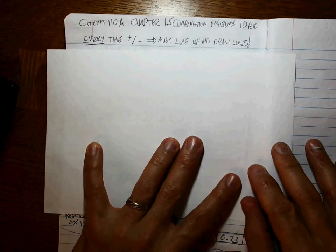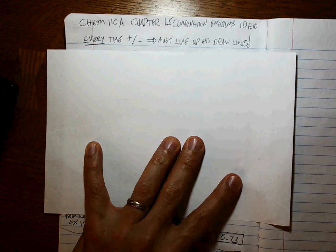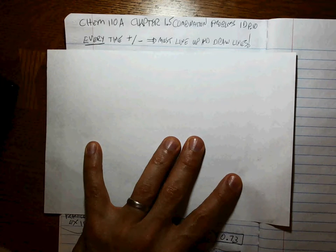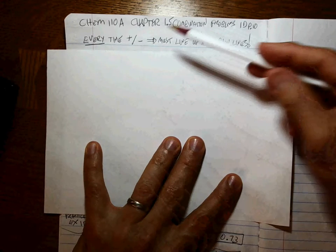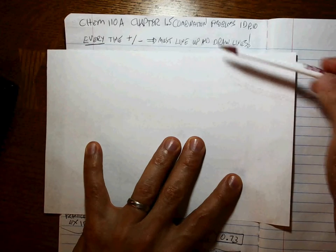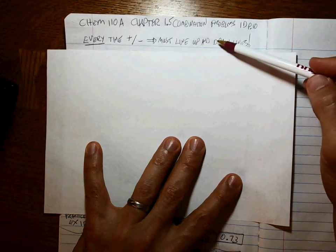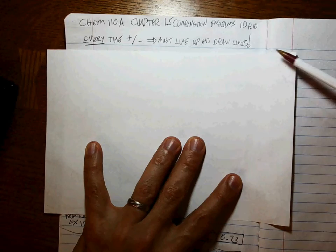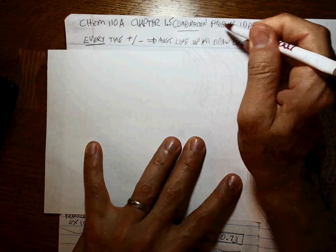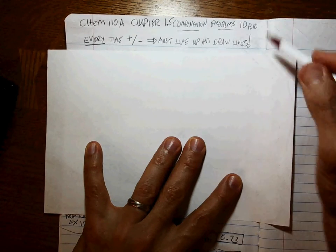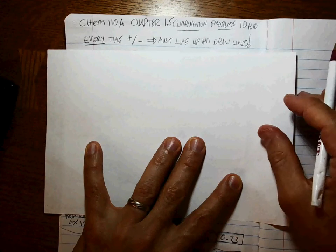Well, we have to remember that the rules are different for addition and subtraction versus multiplication and division. And every time you do an addition and subtraction in this class, you must line up the decimal places and draw the lines. So how do we go about handling combination problems with both addition and subtraction and multiplication and division?